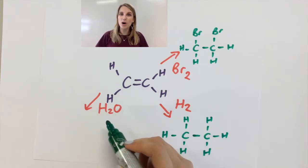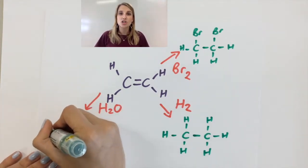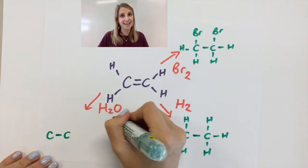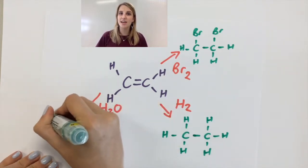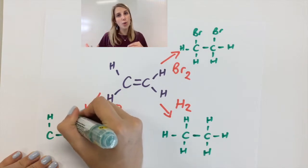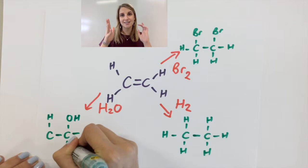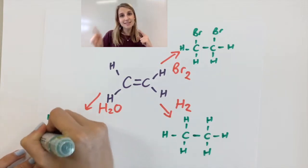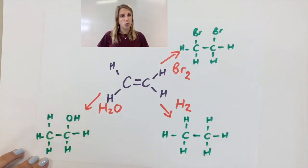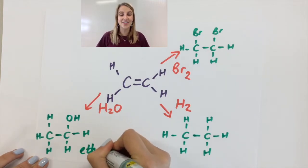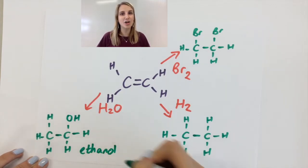Adding water is a little bit more complicated just because you've got three things adding on to your alkene. But if you treat this like one H and one OH then you break it apart and you add a hydrogen and an OH group. And this hopefully you know is called ethanol. It has two carbons in it and it's got the OH group which makes it an alcohol.